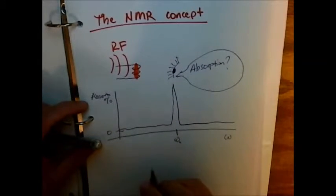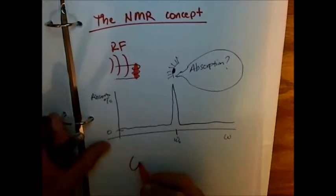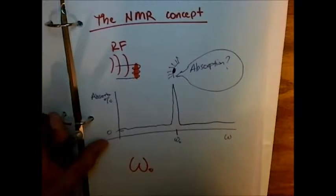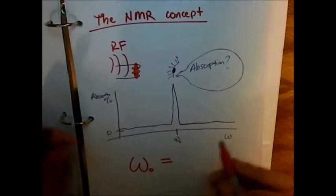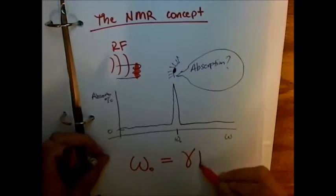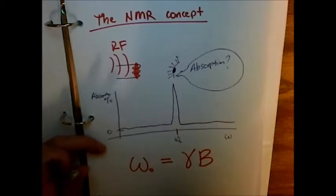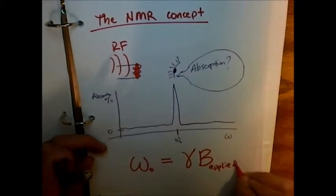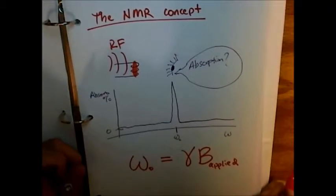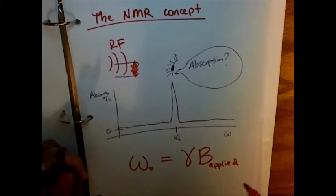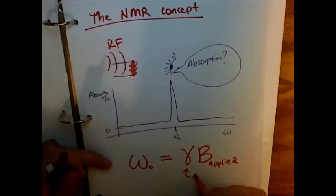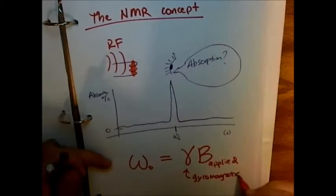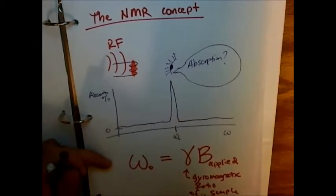As I was trying to get you to solve for on the homework, that frequency is given by that equation. That's the magnetic field that the sample finds itself sitting in, and that is the gyromagnetic ratio of the sample nucleus.